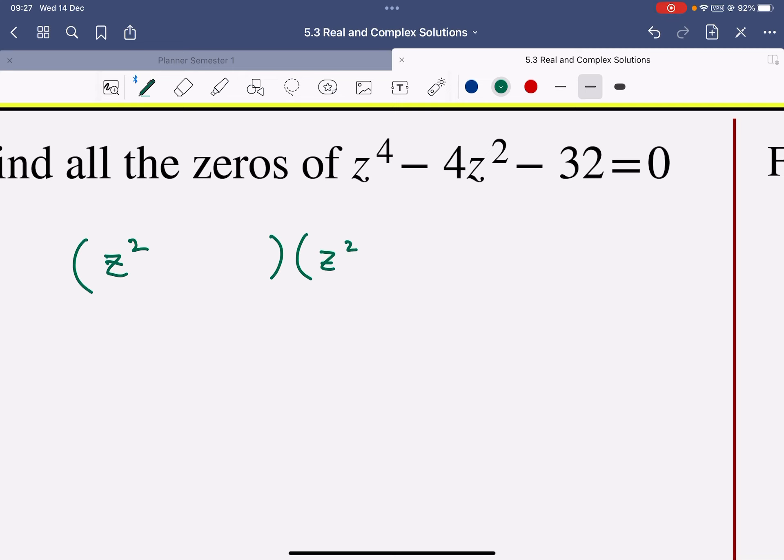And I can have a z squared in the second bracket. I want them to give me negative 32 when I multiply them together. So I think this is going to give me negative 8 and positive 4.